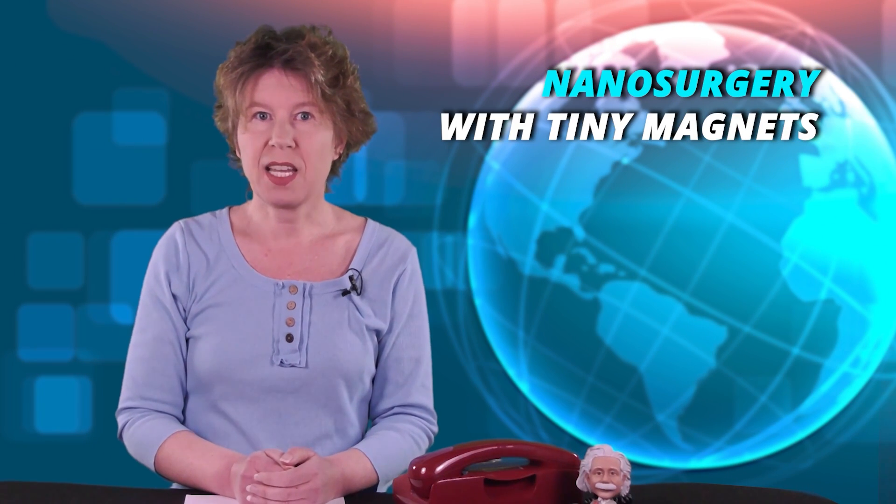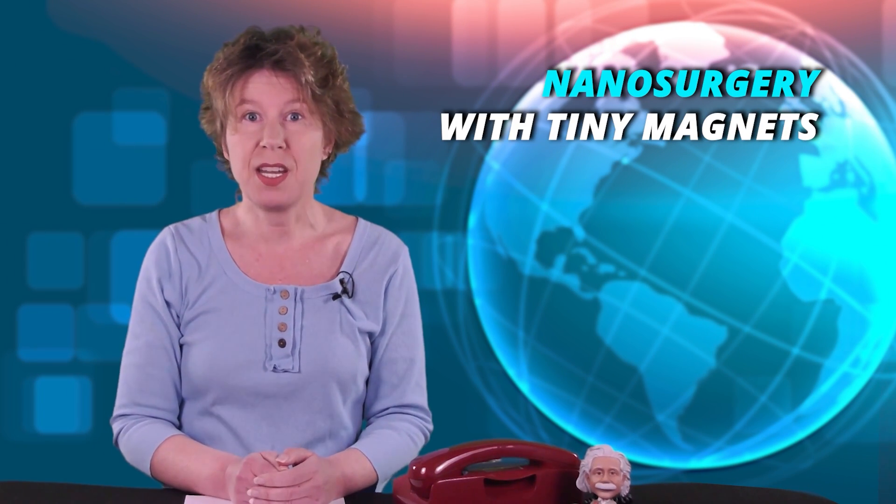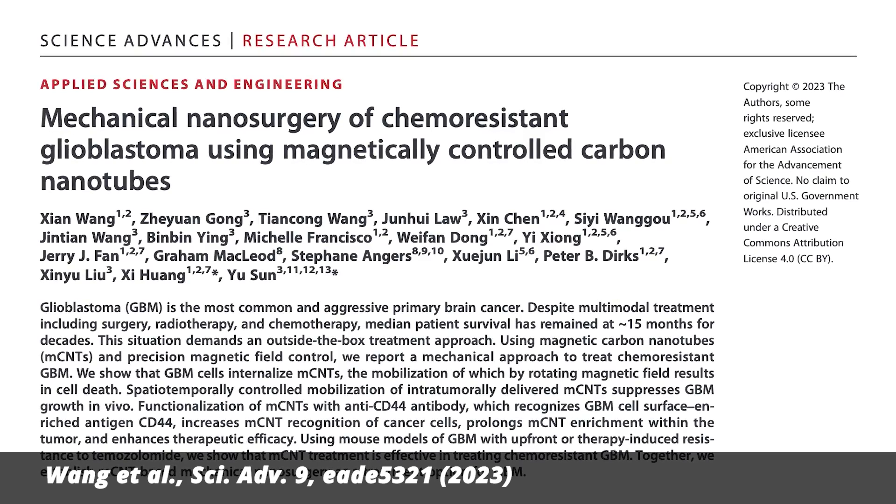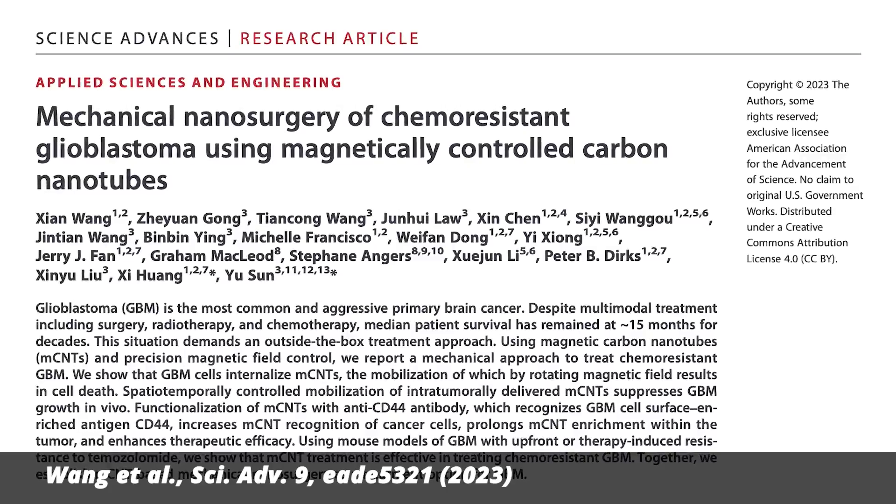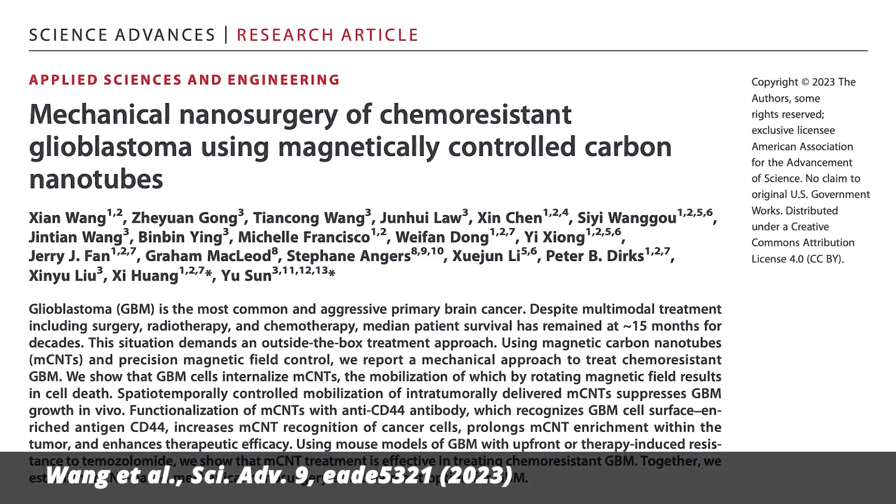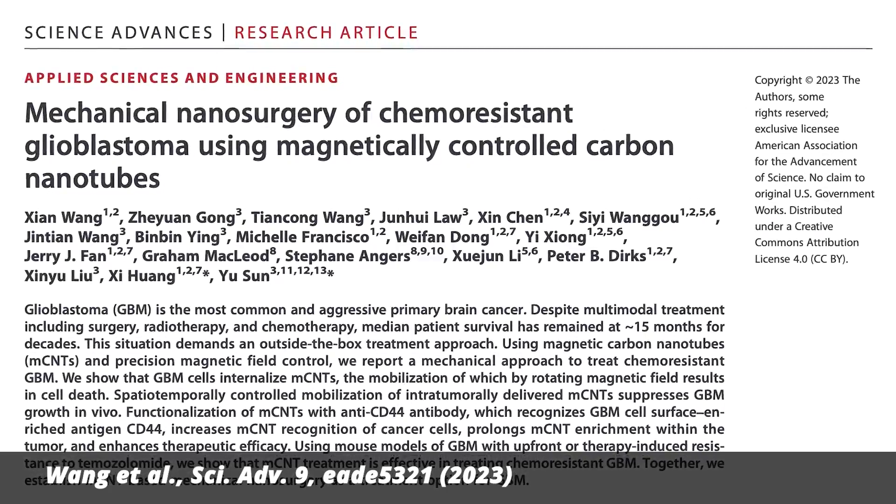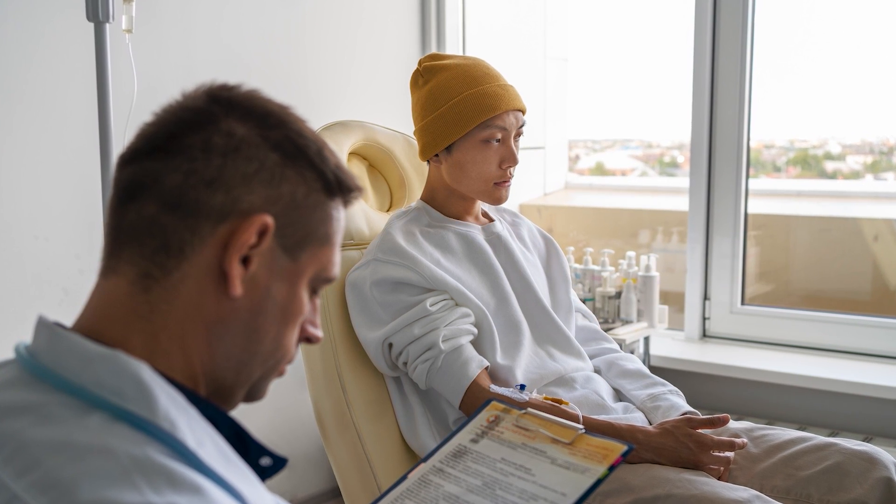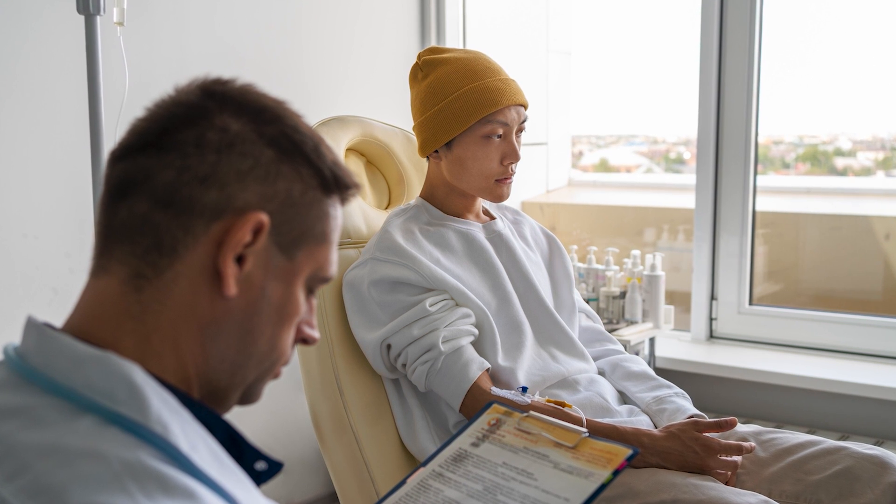A team of scientists from Canada and China has developed a method to conduct nanosurgery on brain cancer using tiny magnets. Basically, the method infiltrates cancer cells with carbon nanotubes. It then uses a magnet to rotate the nanotubes, which destroys the cells from within. The team worked on mice that had been injected with cells of glioblastoma, a type of cancer that is notorious for being aggressive and often resistant to chemotherapy. It's the deadliest form of brain cancer. The median survival rate for someone diagnosed with it is 15 months.